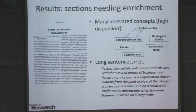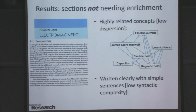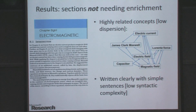Furthermore, this section is full of long sentences and complex words, which makes parsing and understanding harder. On the other hand, here is an example of a section we detect as not needing enrichment — sections that are typically clearly written, with short sentences, easy to understand, and where the concepts discussed are highly interrelated.